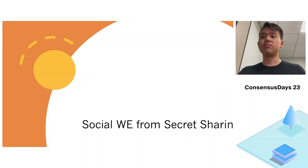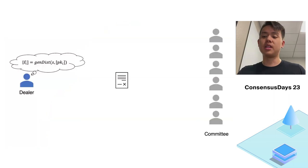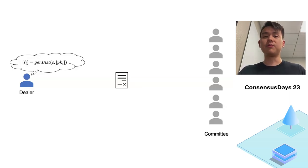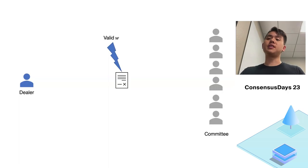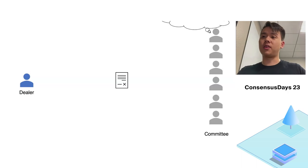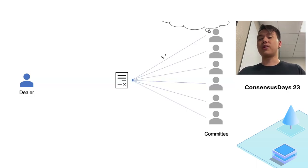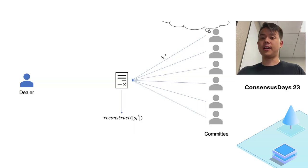Let's see how we can instantiate a primitive social witness encryption scheme from secret sharing. The dealer takes their secret S, generates secret shares, and encrypts each share with the public key of the corresponding participant. The dealer then sends the encrypted secret shares along with the instance to the smart contract. Committee members retrieve their encrypted shares and store them for the duration of the secret. Once a valid witness is presented, each participant decrypts their encrypted share and sends it back to the smart contract, at which point anybody can take the decrypted shares and reconstruct the original secret.